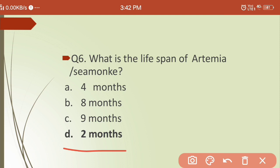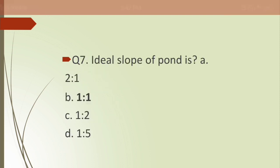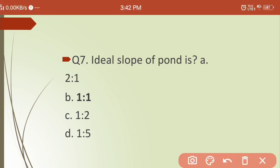Seventh question: what is the ideal slope of a pond? Options are: (a) 2:1, (b) 1:1, (c) 1:2, (d) 1:5. The ideal slope for a pond is 1:1.